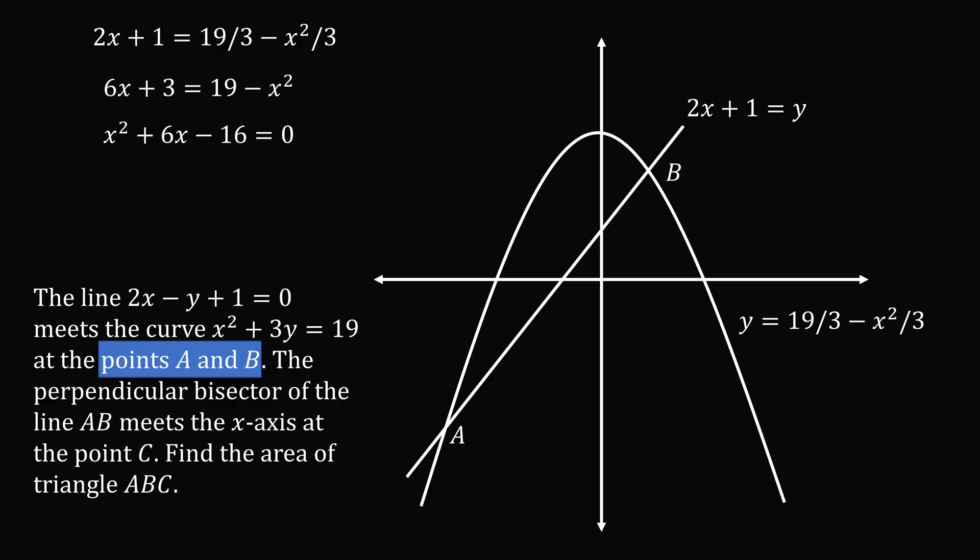So 16 has factors of 8 and 2, so that works out perfectly to the factors of x plus 8 multiplied by x minus 2. So that means we have two solutions here, x equals negative 8 and x equals 2.